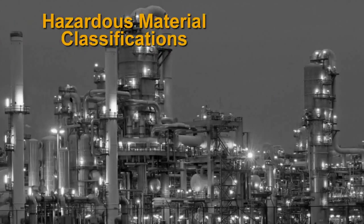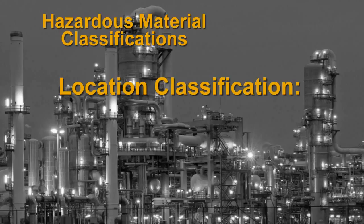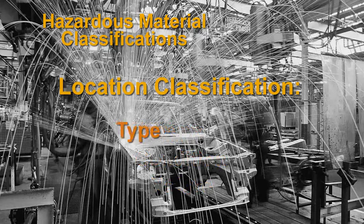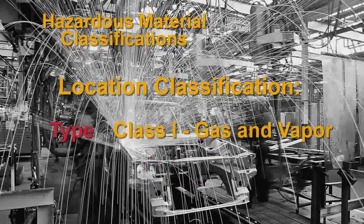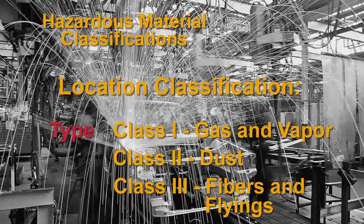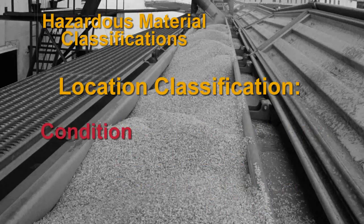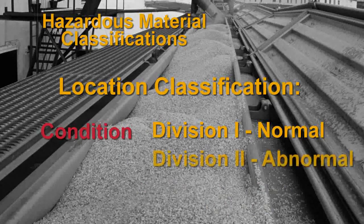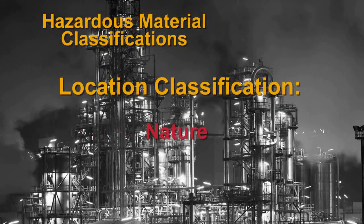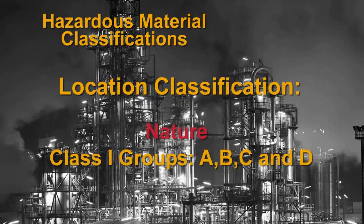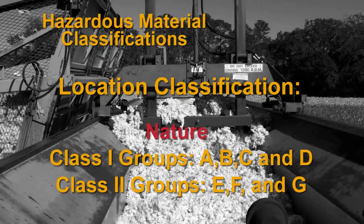In summary, hazardous locations are classified in three ways by the National Electric Code: type, condition, and nature. There are three types — Class 1 (Gas and Vapor), Class 2 (Dust), and Class 3 (Fibers and Flyings). There are two kinds of conditions — Division 1 Normal and Division 2 Abnormal. And finally, the nature of the hazardous substance is indicated by Groups A, B, C, and D in Class 1 locations, and Groups E, F, and G in Class 2 locations.